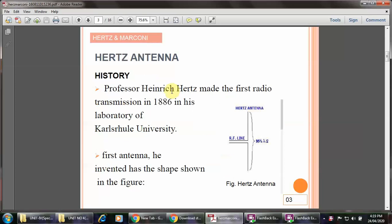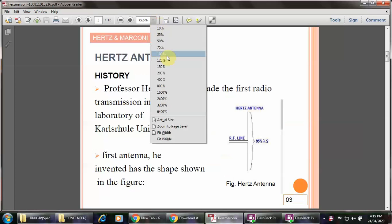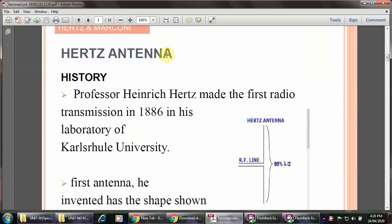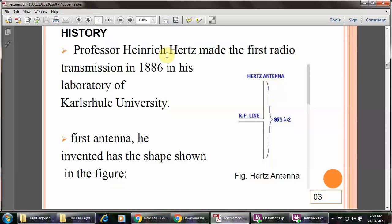The Hertz antenna: Professor Heinrich Hertz made the first radio transmission in 1886 in his laboratory at Karlsruhe University. The first antenna he invented has the shape shown in the figure. It is a simple dipole antenna. In the dipole antenna, the signal applied between the antenna elements produces 95% radiation, and its length is lambda by 2.